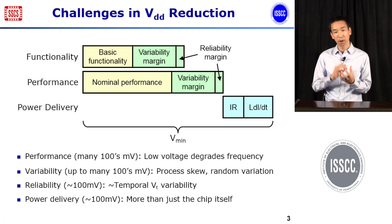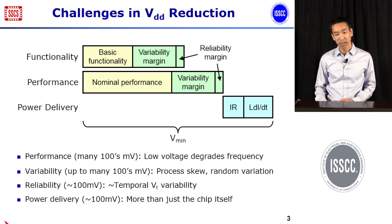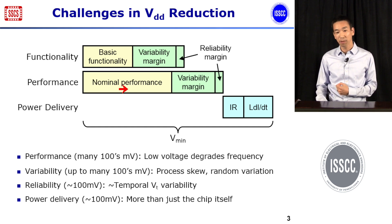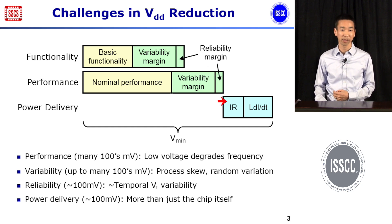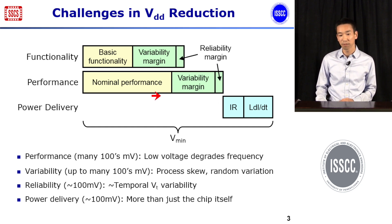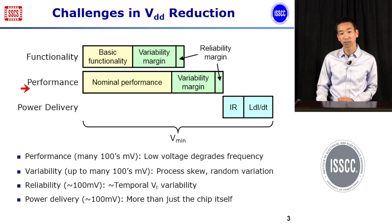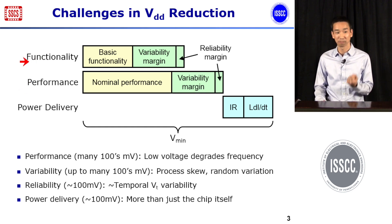I'm going to start with a cartoon of how all the different components of Vmin fit together. We want chip functionality and performance to be acceptable, and we'll have some nominal voltage margin to make sure the chip works. Then we're going to apply a variability margin and a reliability margin on top of that. In this cartoon, the performance-limited Vmin is a little bit higher than the functionality-limited Vmin — this depends on the application. For a logic path it might be more performance limited, whereas for a memory path it might be more functionality limited, because memory is generally very sensitive to variability.